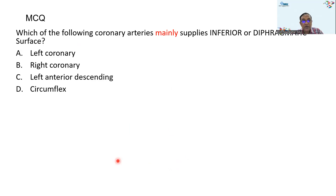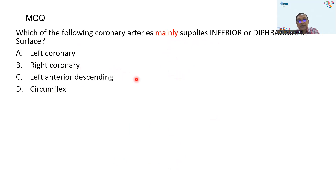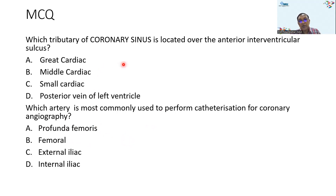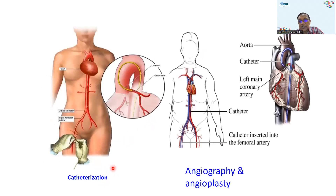Looking at some practice questions: Which coronary artery mainly supplies the inferior (diaphragmatic) surface? The answer is the right coronary artery, via its posterior interventricular branch. Which artery supplies the left border of the heart? The circumflex branch of the left coronary artery. Which tributary of the coronary sinus is located over the anterior interventricular surface? The great cardiac vein, running alongside the LAD. Which artery is most commonly used for catheterization in coronary arteriography? The femoral artery.